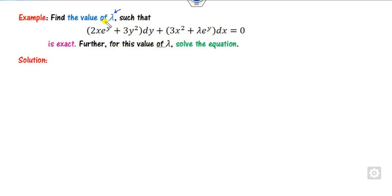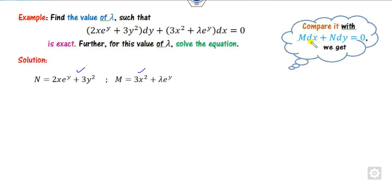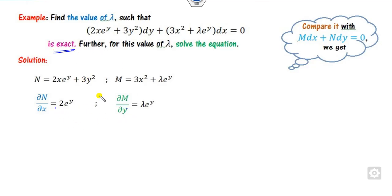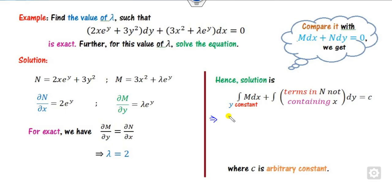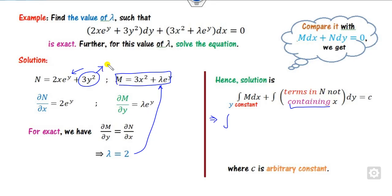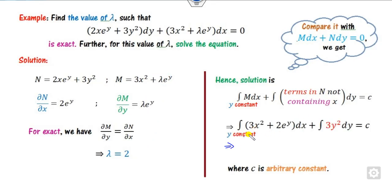Look at another example. You have to find the value of λ for which this is exact, and also find the solution. You compare to get M and N, where M is the coefficient of dx. Since it is given as exact, both partial derivatives are equal. Equating them gives λ = 2. Once λ = 2, you find the solution by substituting M and the terms in N not containing x, which is 3y². Integrating with y constant gives x³ plus terms, giving the required answer.